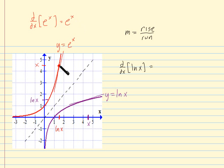So if I want to find the slope of the tangent line to the red curve, to this y equals e to the x curve, at this input value, ln of x, then the slope I seek is e to that input value, e to the ln of x.